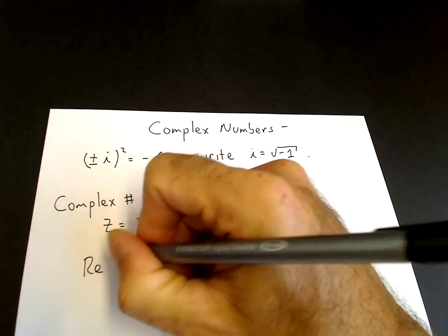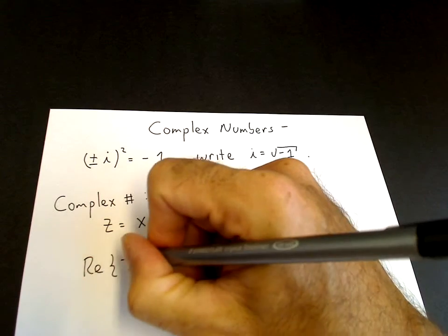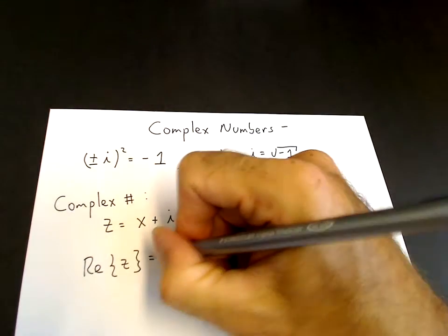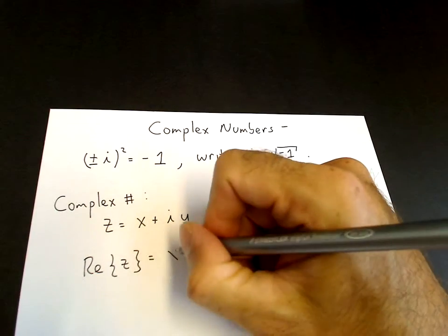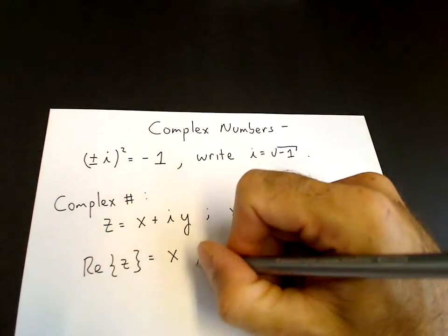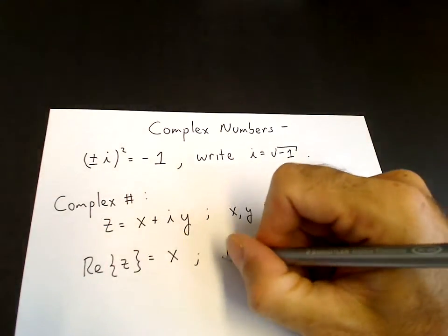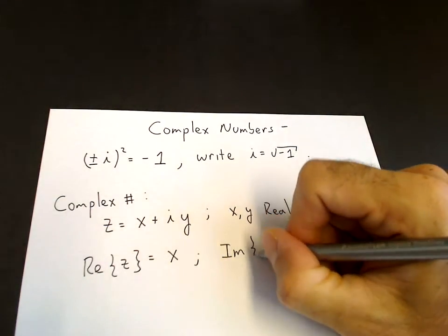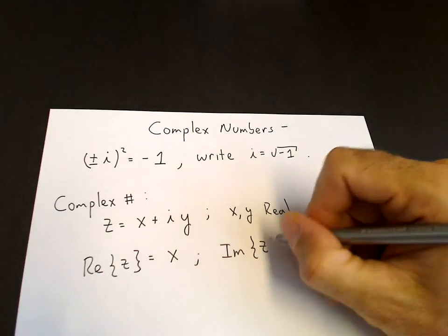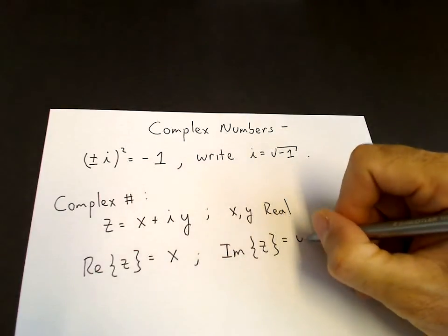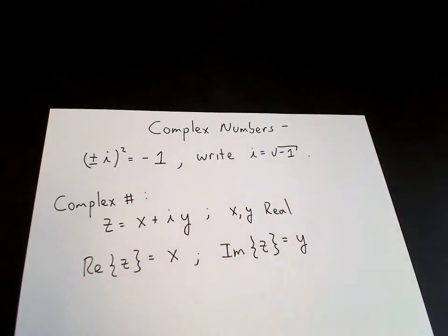The real part of z is the part that does not multiply i. The imaginary part of z is the part that does multiply i.